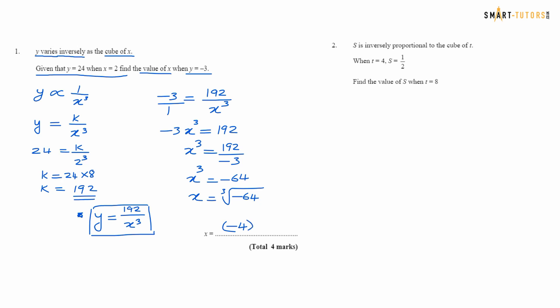That is our answer for question number one. Question number two: s is inversely proportional to the cube of t, so t cubed. When t equals 4, s equals a half. So I can change this to an equation: s equals k over t cubed. s equals a half, so a half equals k over 4 cubed. 4 cubed is 64. So a half equals k over 64. Cross multiplying: 2k equals 64.